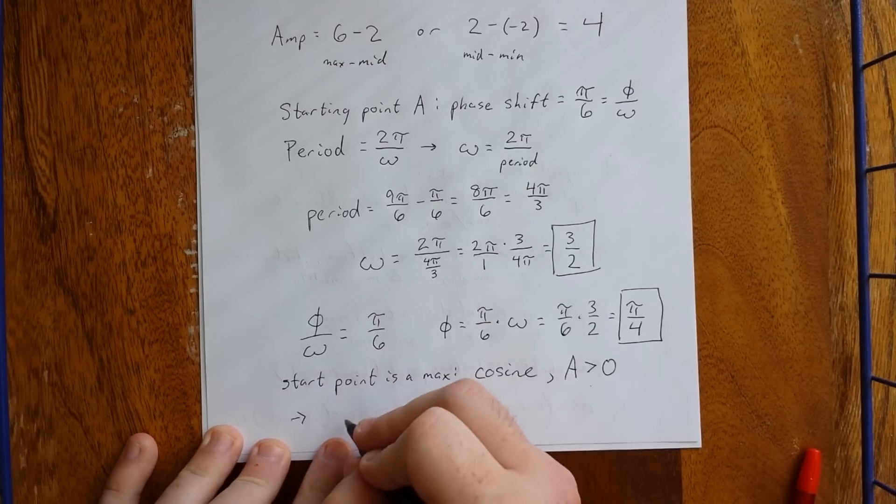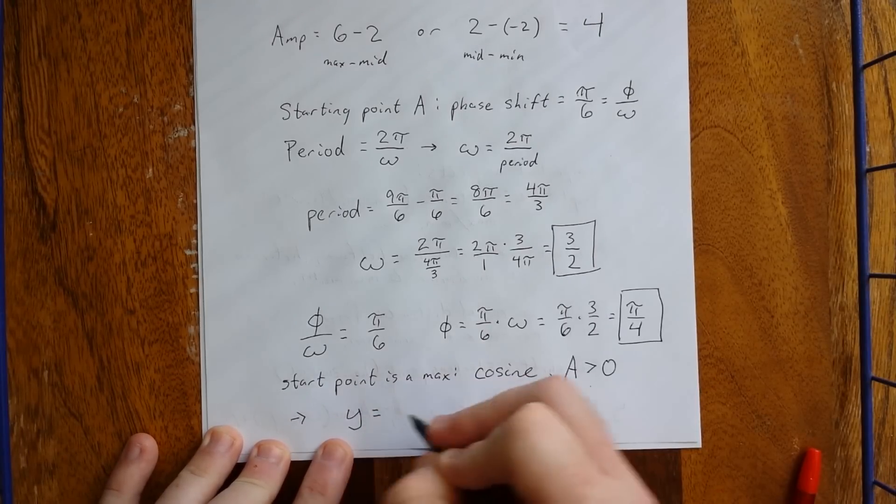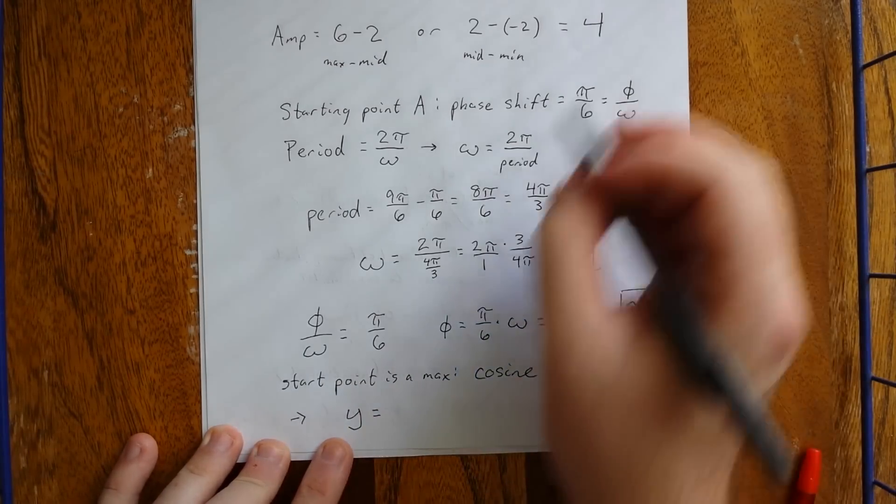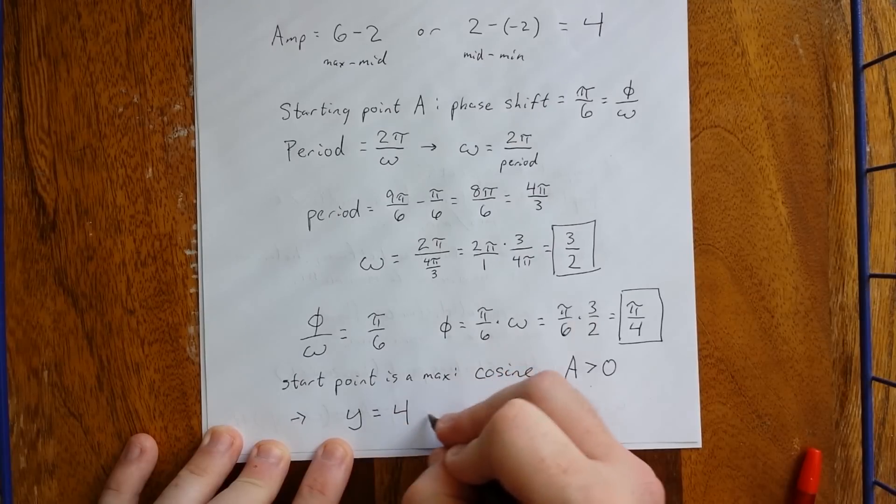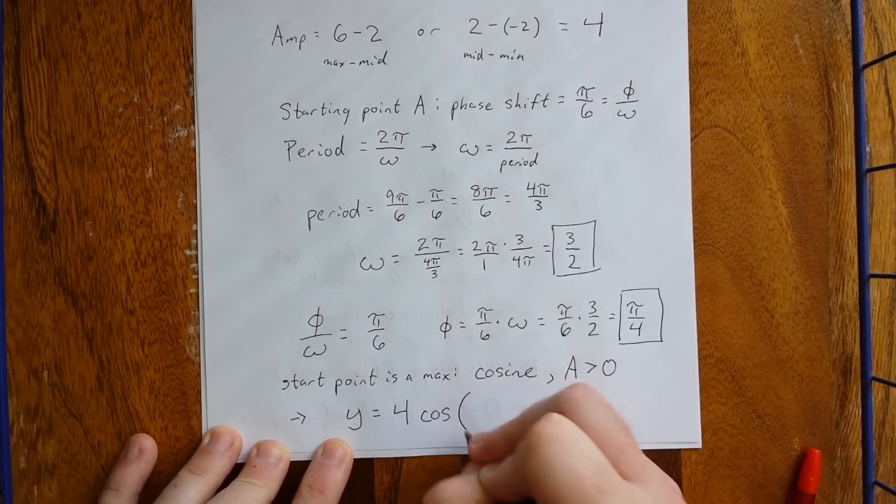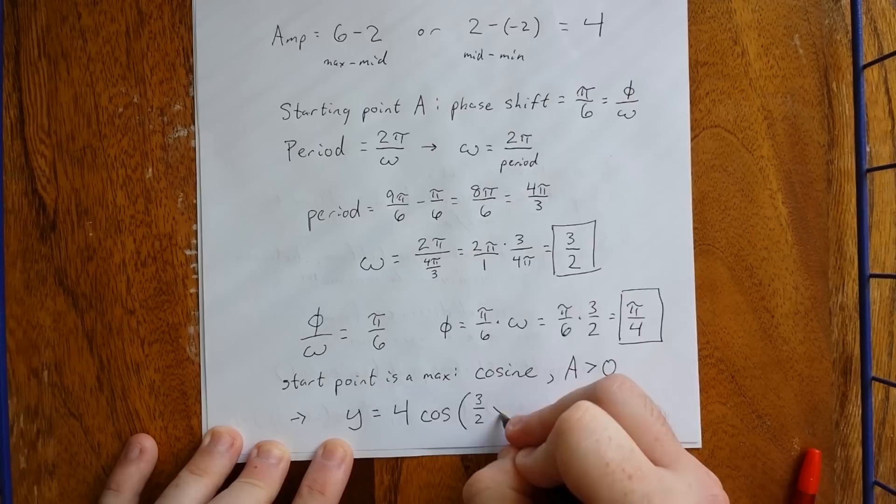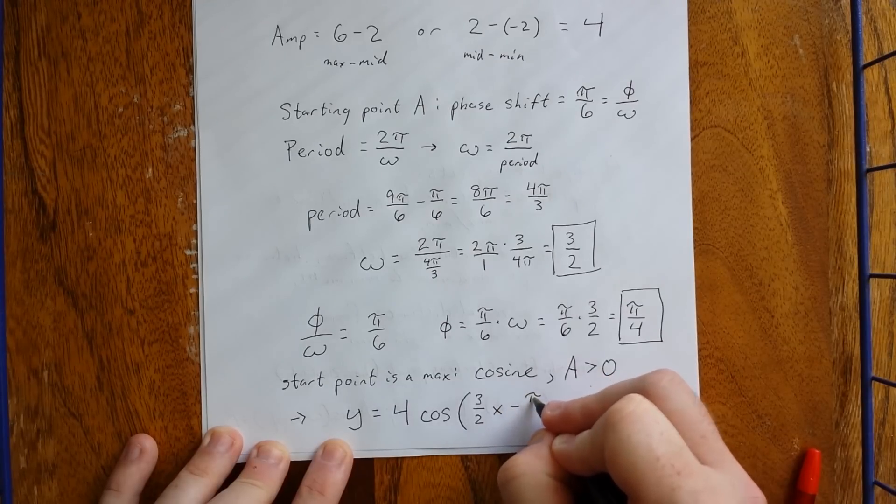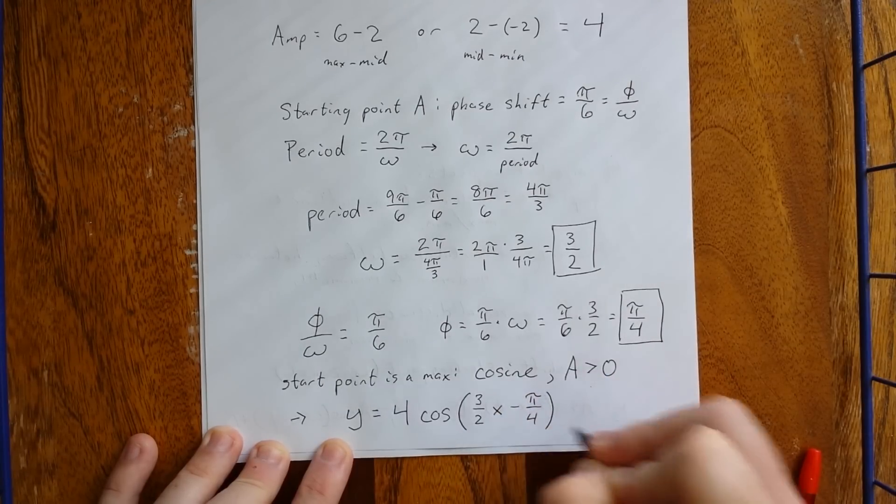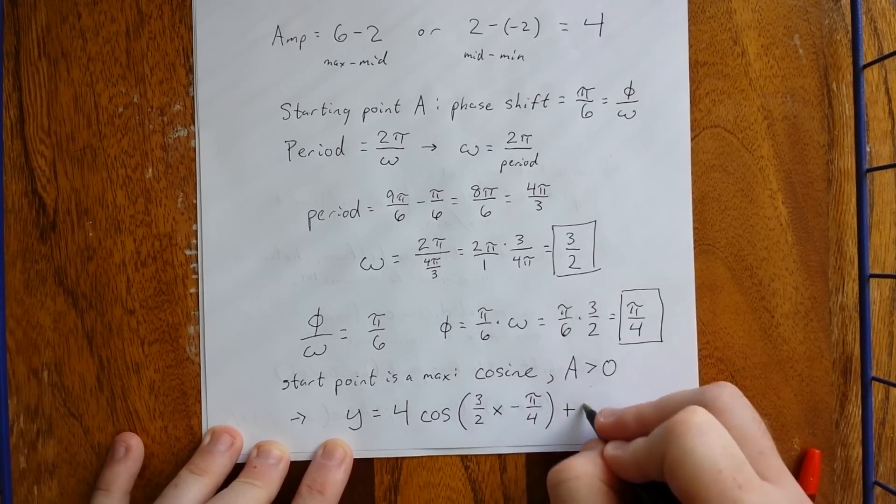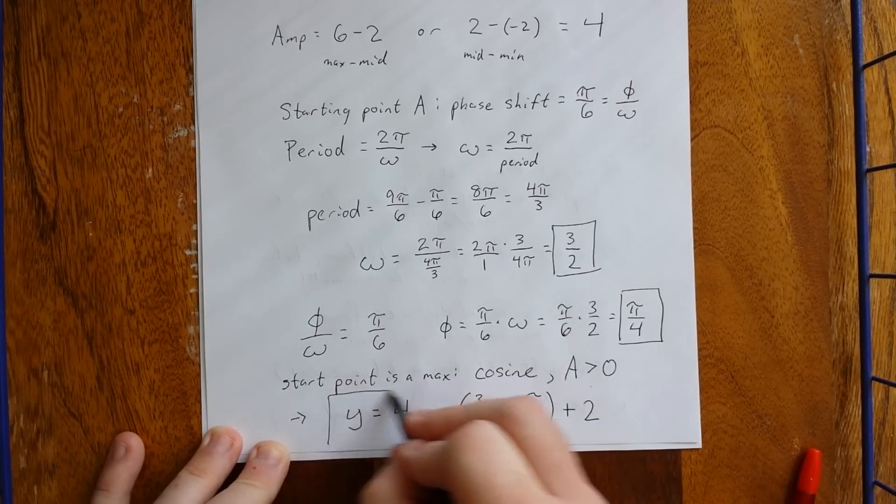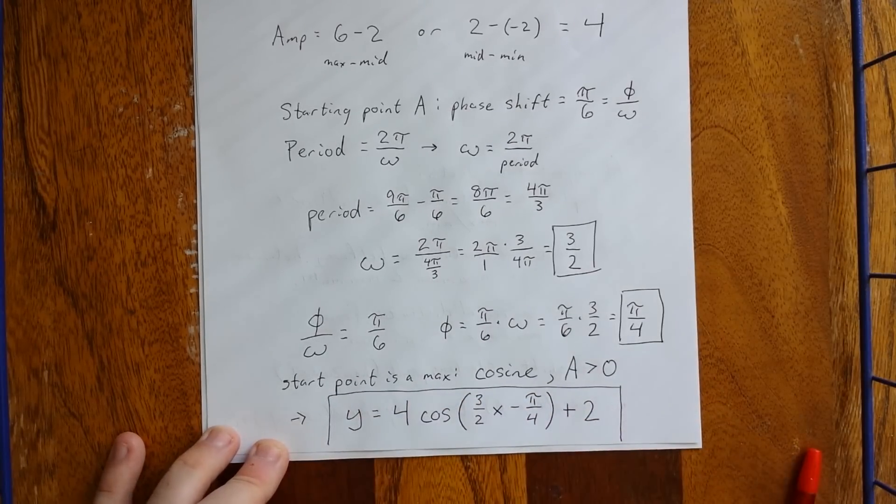So, putting all of these aspects together, we've got y equals. We said this is going to be a times the cosine. Amplitude is 4. So, that will be 4 times the cosine of omega x minus phi plus the midline. Our final answer for this graph is right here.